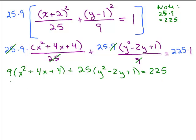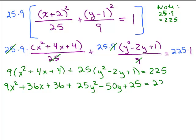So we need to distribute the 9 to the first parentheses. So I have 9x² + 36x plus 36, and now I need to distribute the 25 to the second parentheses, 25y² - 50y plus 25 equals 225.